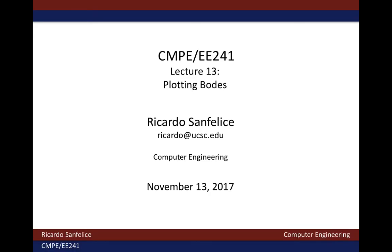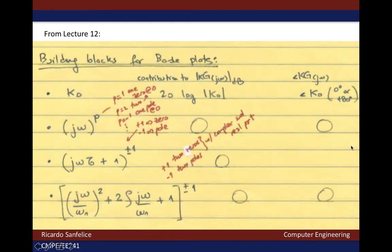The goal of this lecture is to plot each of the building blocks that we learned in lecture 12 for Bode plots. The first one is the constant that multiplies the normalized transfer function, k0, and the magnitude corresponding to a constant is no more than the constant expressed in decibels, for which you need to compute 20 times the log in decimal base of the absolute value of k0.